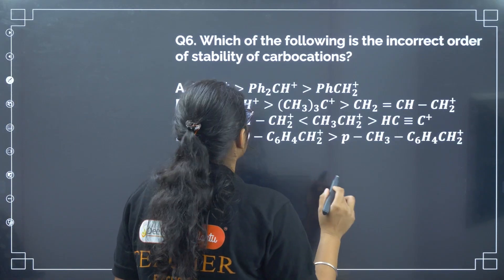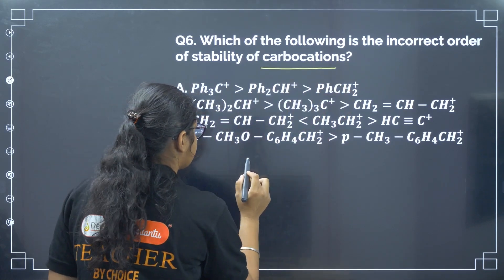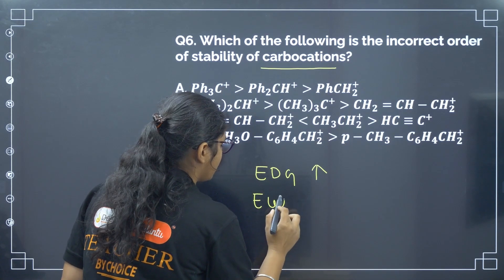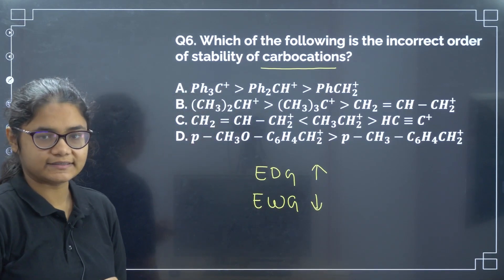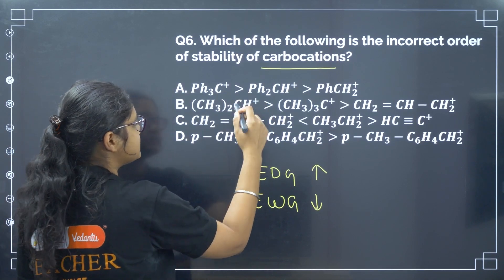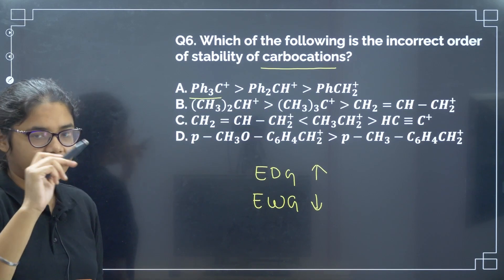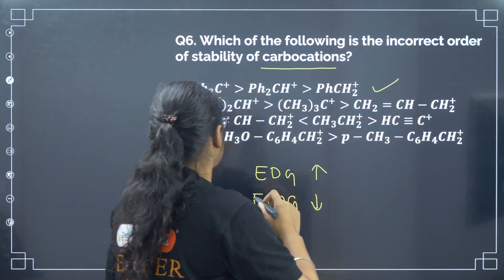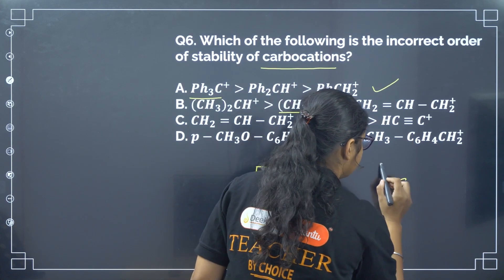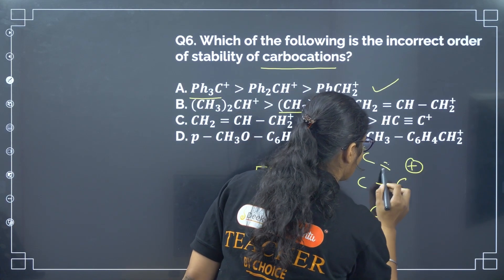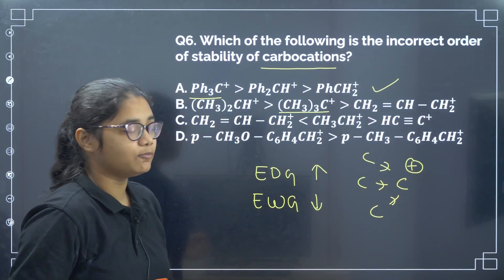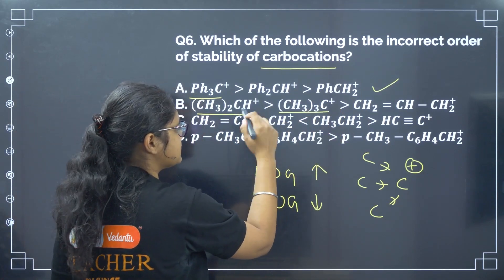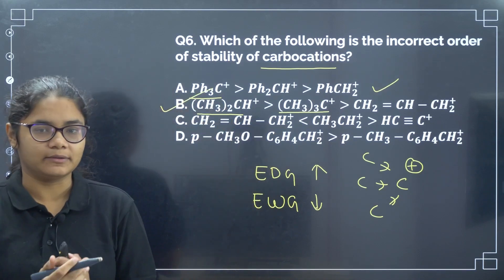Next: which of the following is the incorrect order of stability of carbocation? For carbocations, if electron donating groups are present, stability increases; electron withdrawing groups decrease stability. Here three phenyl groups donate through resonance, then two, then one — that order is correct. But where three methyl groups are attached versus two carbon groups: three methyl groups make it more stable than two. So that order shown is incorrect. Correct answer is option number B.